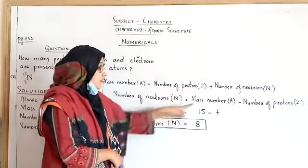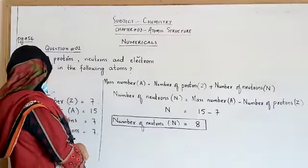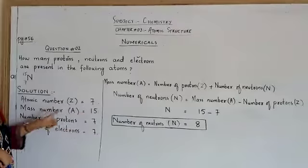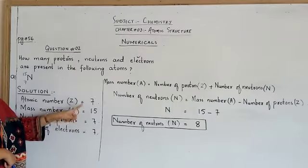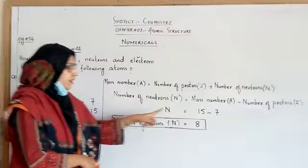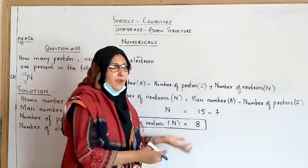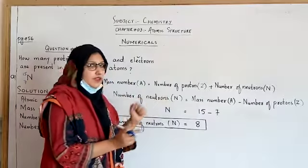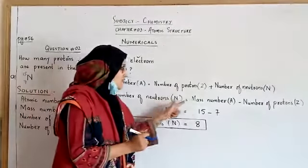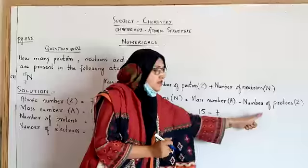To find N: mass number is already given as 15, and number of protons is given as 7. So we just put in the values. Number of neutrons N equals A minus Z.